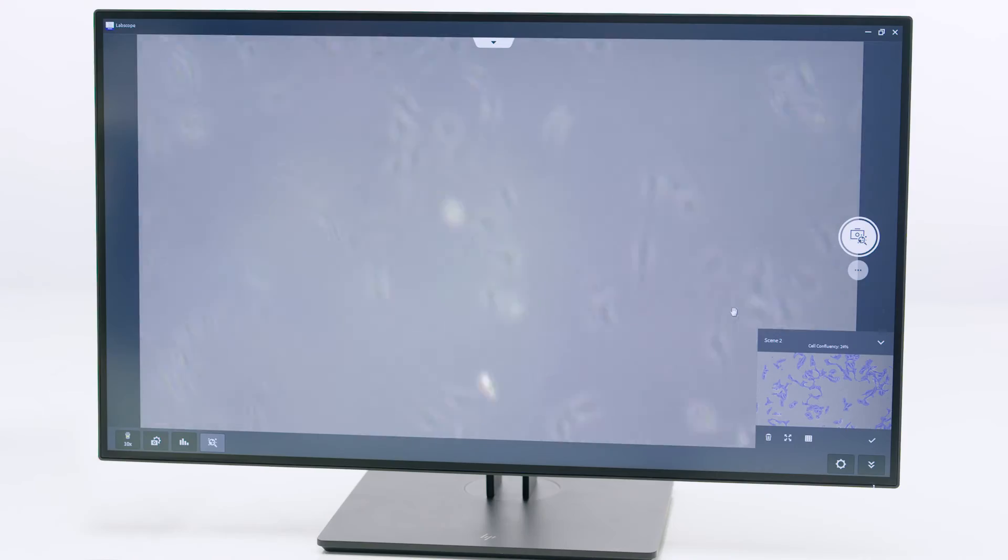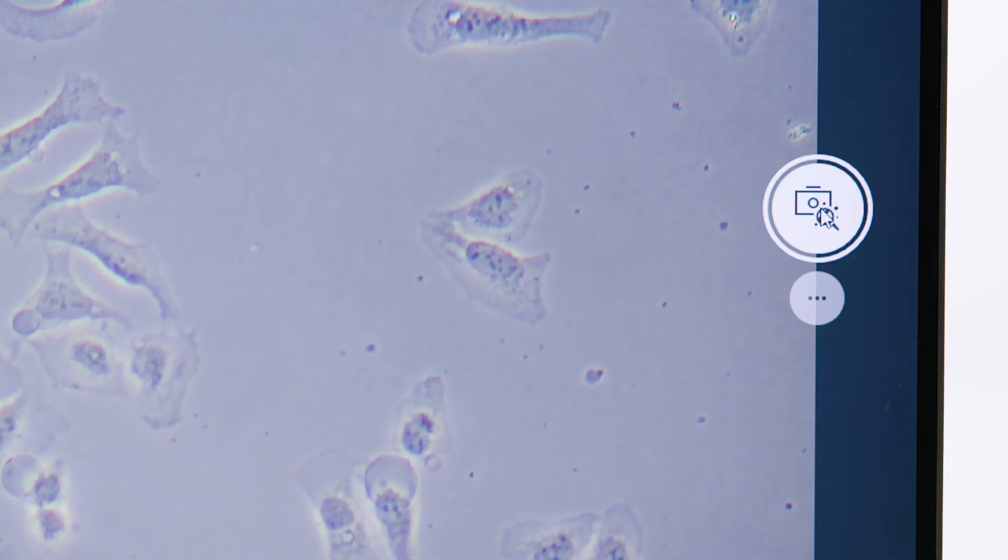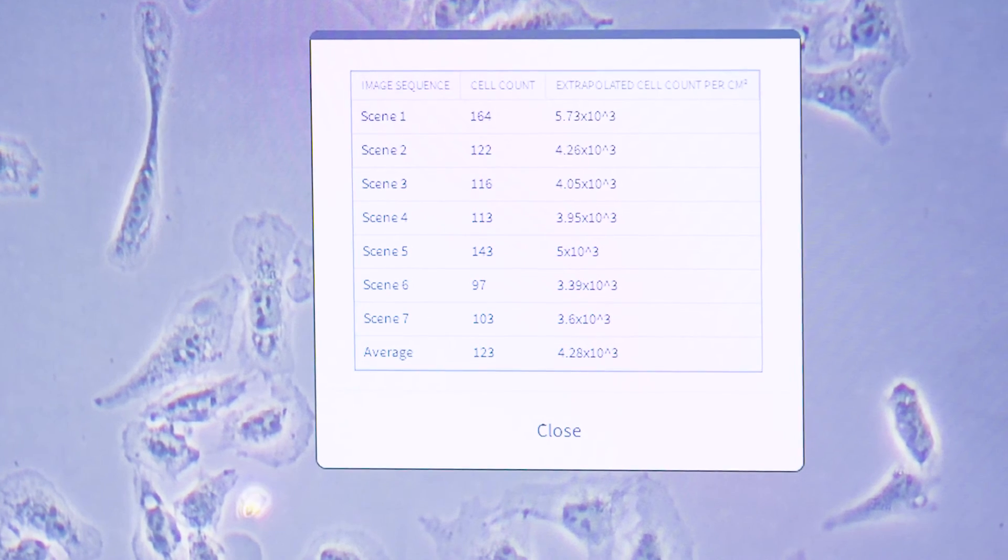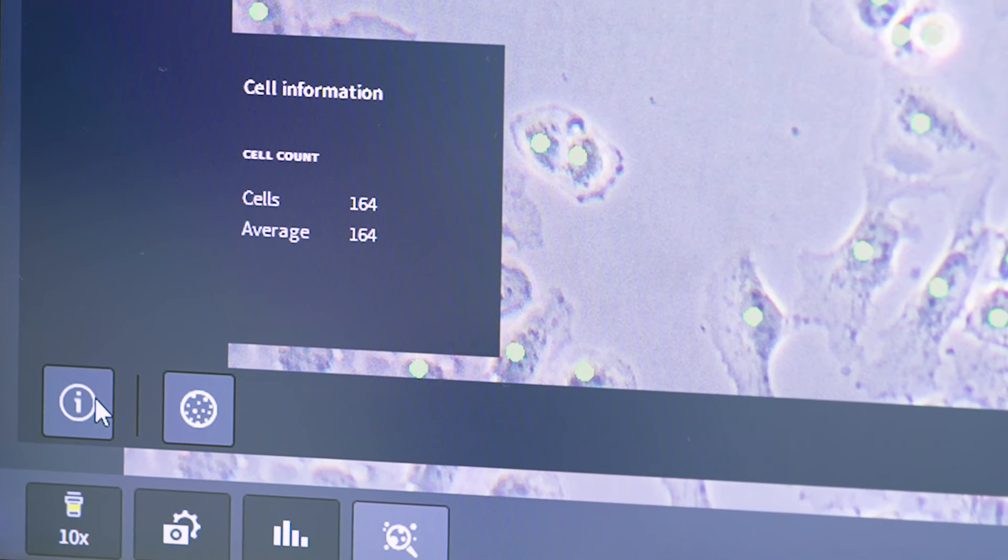You can take images at multiple positions in your dish to accommodate for inhomogeneities. The software then provides the average cell count per area for your cell population at a glance.